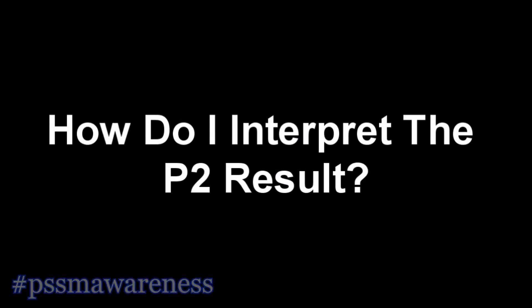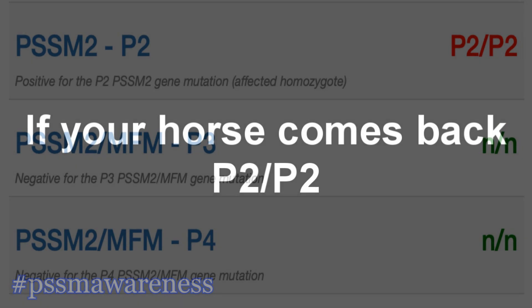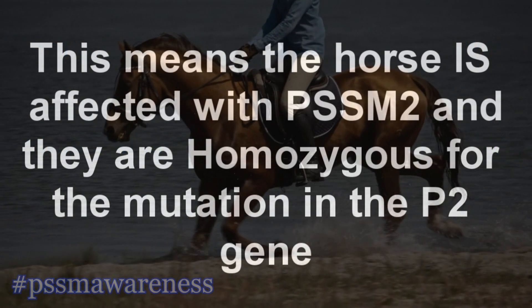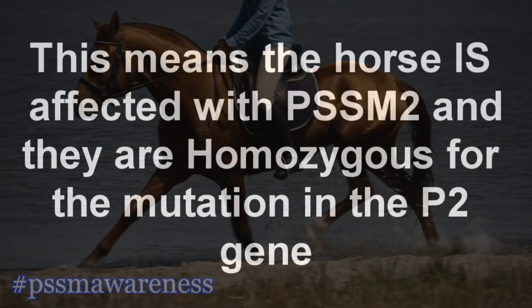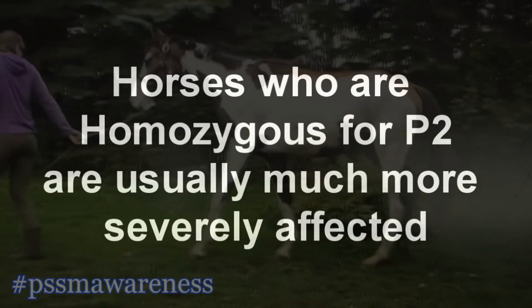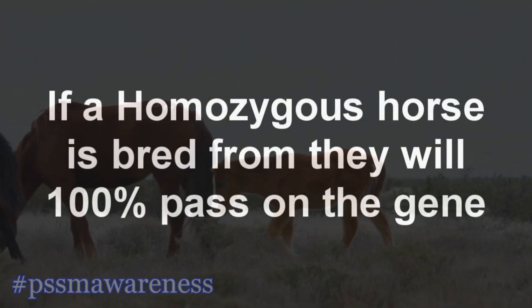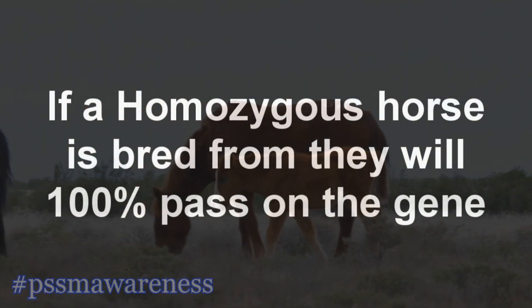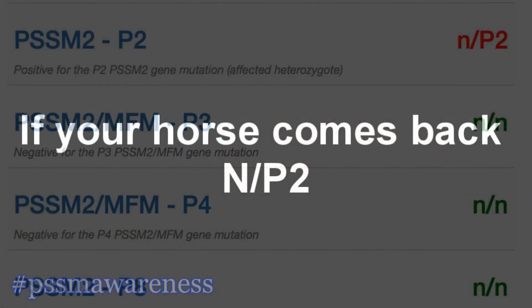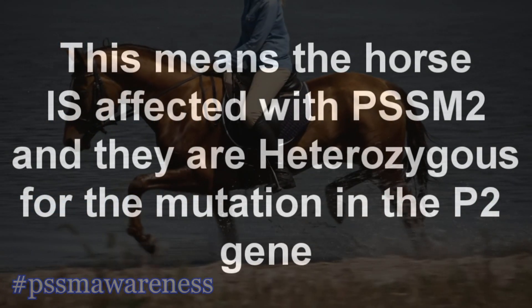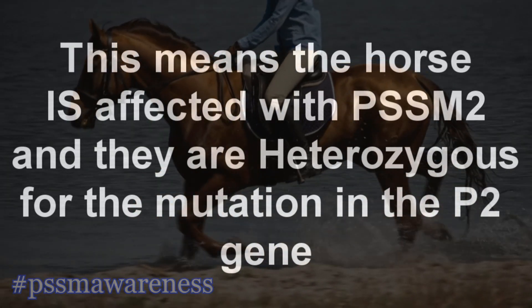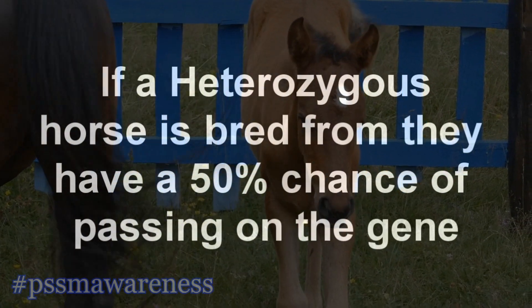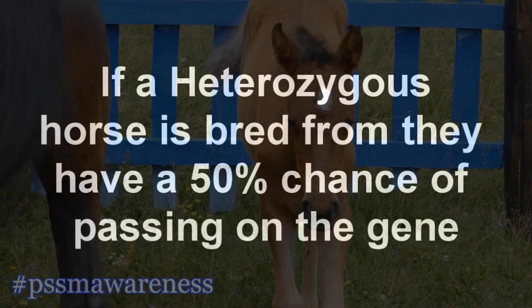How do I interpret the P2 result? If your horse comes back P2/P2, this means the horse is affected with PSSM2 and they are homozygous for the mutation in the P2 gene. Horses who are homozygous for P2 are usually much more severely affected. If a homozygous horse is bred from, they will 100% pass on the gene. If your horse comes back N/P2, this means the horse is affected with PSSM2 and they are heterozygous for the mutation in the P2 gene. If a heterozygous horse is bred from, they have a 50% chance of passing on the gene.